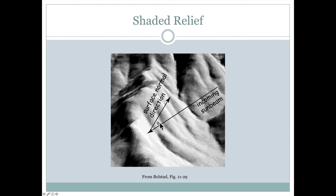In cases where there's some angular difference between the surface normal and the incoming light beam, we would still have light terrain but it would not be completely white. In darker areas, we would expect the surface normal to be pointing in a very different direction.